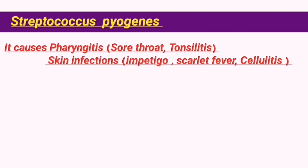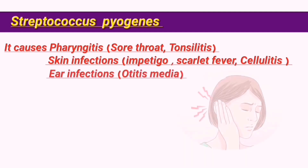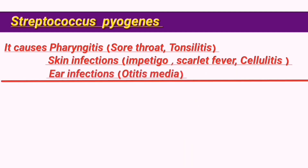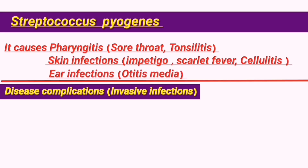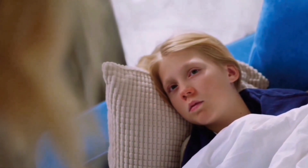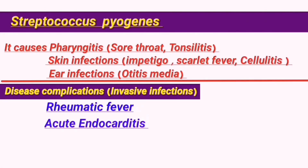Another disease caused by S. pyogenes is otitis media, or inflammation of the middle ear. In the case of improper treatment or ignoring and neglecting the required antibiotic dosage, these bacteria can lead to further serious consequences such as rheumatic fever. The symptoms of rheumatic fever vary from one person to another but include symptoms in the joints and skin, inflammation accompanied by fatigue and high fever. It can also affect the heart, leading to acute endocarditis.